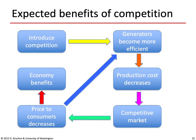The expected benefits of competition itself can be summarized in a cycle. The introduction of competition means generators are now under pressure to become more efficient so they don't lose market share. As they become more efficient, their costs of production decrease, which typically results in decreased prices charged to consumers. Ideally this creates a virtuous cycle where generators keep becoming more efficient, production costs keep decreasing, and the competitive market translates that into price reductions for consumers — from which the economy as a whole benefits.